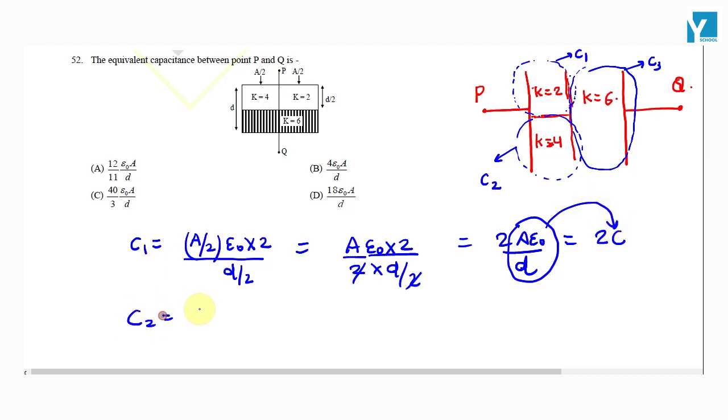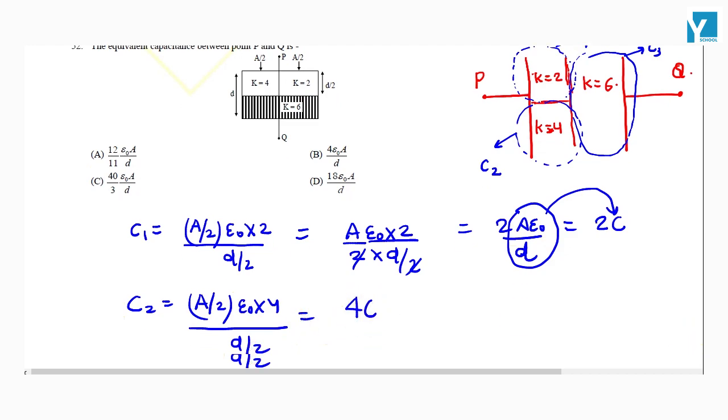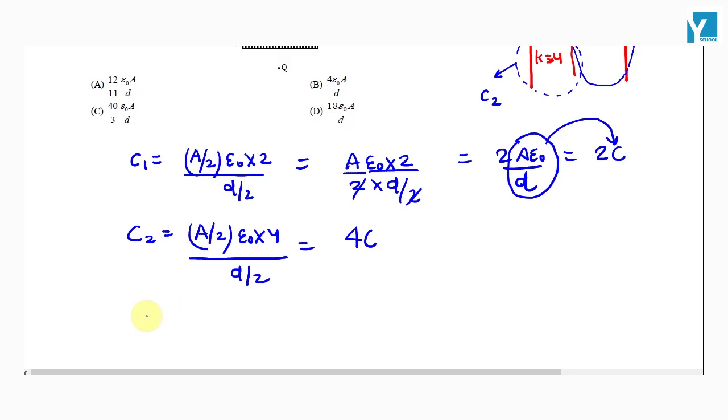Similarly, C2 is equal to A by 2 epsilon naught into 4 by d by 2, which comes out to be 4 times C. And C3 is equal to A epsilon naught times dielectric constant 6 divided by d by 2, which comes out to be 12 times C.